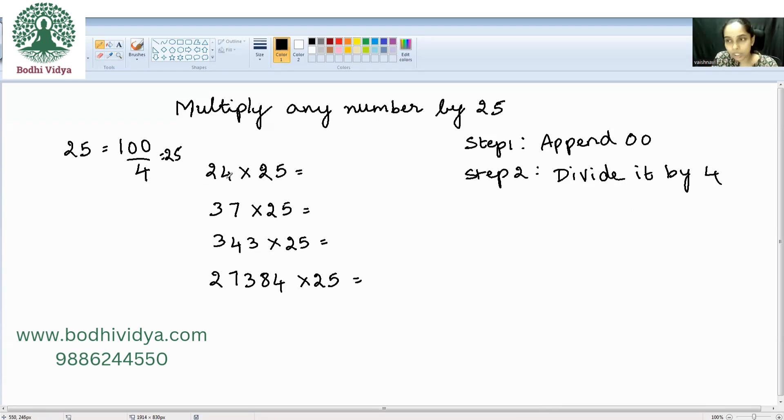Now 24 is the number which has to be multiplied by 25. I need to append two zeros, 2400, and then divide by 4. Your final answer is 600.